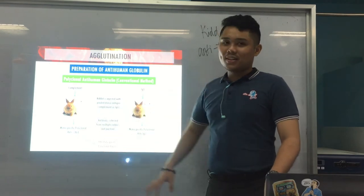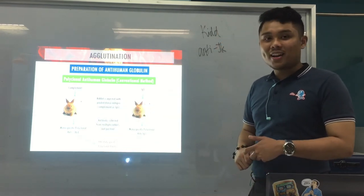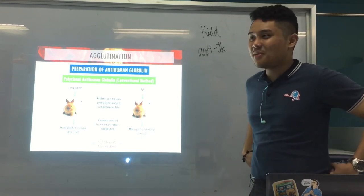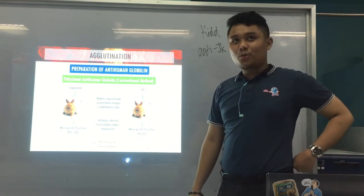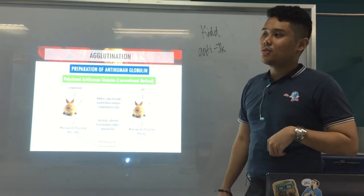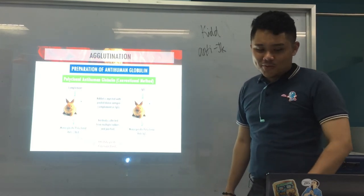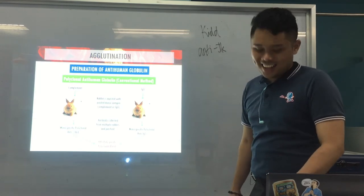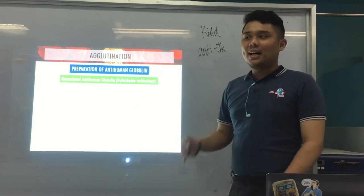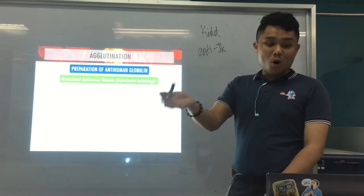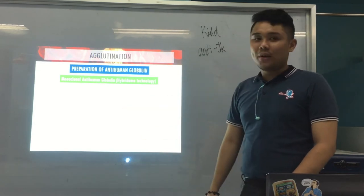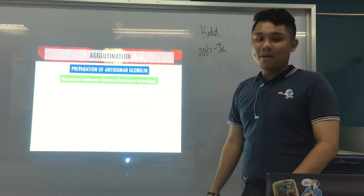Another type is monoclonal anti-human globulin. When I say monoclonal, it comes from a single clone of plasma cells. This uses hybridoma technology and utilizes mice — both words start with M, which helps remember. Mice can also be rats, but it's usually mice.